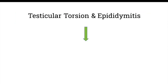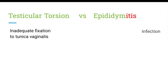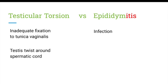Testicular torsion and epididymitis are both similar because they are both painful. Testicular torsion occurs due to inadequate fixation of the lower pole of the testes to the tunica vaginalis, which can result in twisting of the testes around the spermatic cord. Initially the venous system is affected first — there is compression of the pampiniform plexus and reduced venous blood flow — then eventually the arterial system is affected as well. The spermatic cord contains the gonadal artery, a branch of the abdominal aorta, so twisting can lead to ischemia.